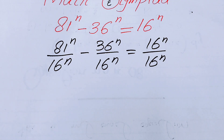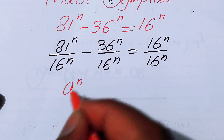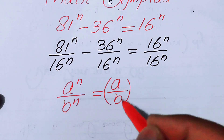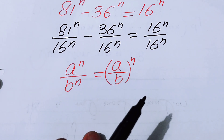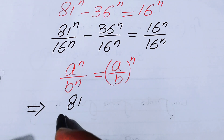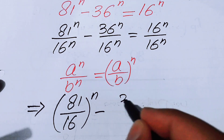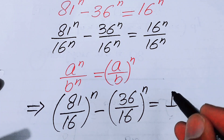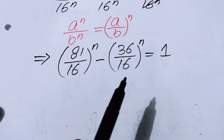Now we can use the nice exponential law: a^n over b^n equals (a/b)^n. Applying this law, we combine the exponents to get (81/16)^n minus (36/16)^n equals 1, since the right-hand side simplifies to 1.